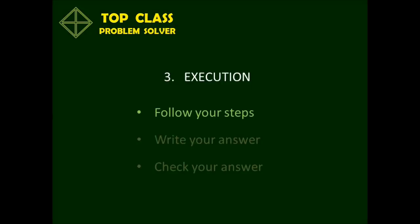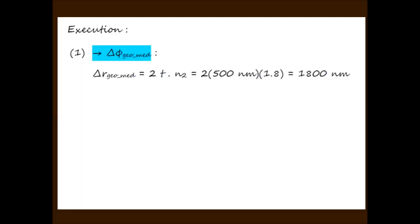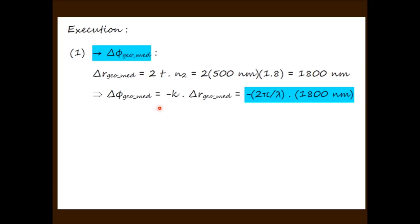The first step of the execution is to follow the steps of the action plan. We find the phase difference due to the geometric path difference between the two rays. In purely geometric terms, this path difference is twice the thickness of the film. Because this entire path difference takes place within the second medium, we multiply it by the refractive index of the film. We then use the general equation to find the phase difference that corresponds to this geometric path difference.